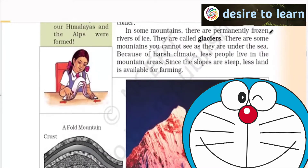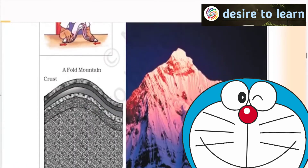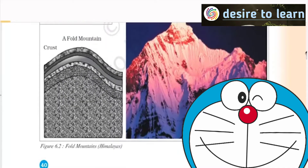In some mountains, there are permanently frozen rivers of ice, or glaciers — for example, the Himalayas. This is a Fold Mountain, and how is this happening? Because of the convergence of two plates. Whatever sediments are there, they are rising to form the fold. Can you see? In fold mountains, layers after layers are usually present.